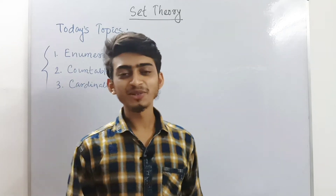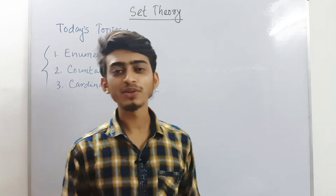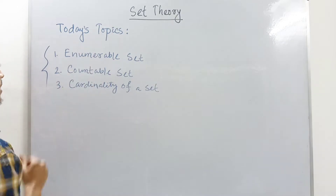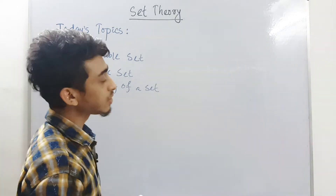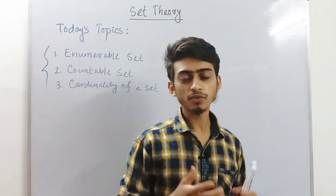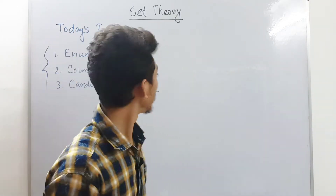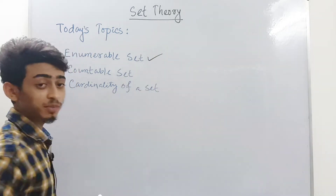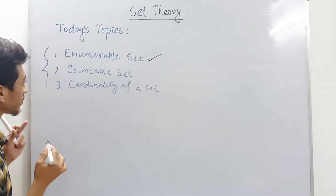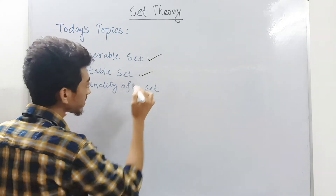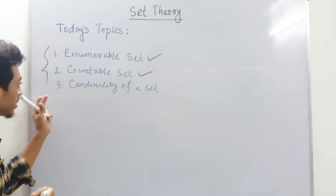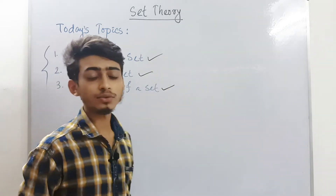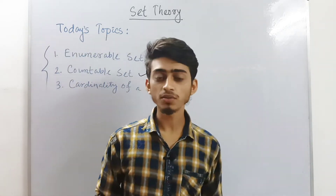Hello students, welcome back to a new video. In today's video, we will go back to the chapter set theory again. In this video, we will cover three topics basically. First of all, we will know what is enumerable set — the definition of enumerable set. After that, we will know about countable set, and lastly, we will know about cardinality of a set. So these are the three topics we will cover today.